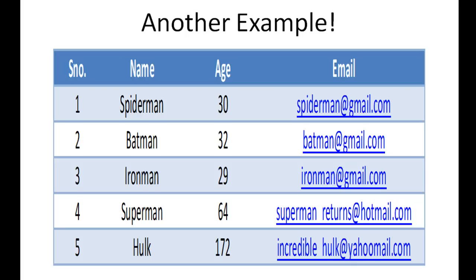We'll discuss data types in more detail in the next tutorial. Just understand that all values associated with a particular field have the same data type. The age field is a number. Now, if you wanted to modify this table and replace age with date of birth — for example, Spider-Man is 30 years old, so subtracting 30 from 2013 gives 1983, making the DOB January 1st, 1983 — then the data type of that field would change from number to date.